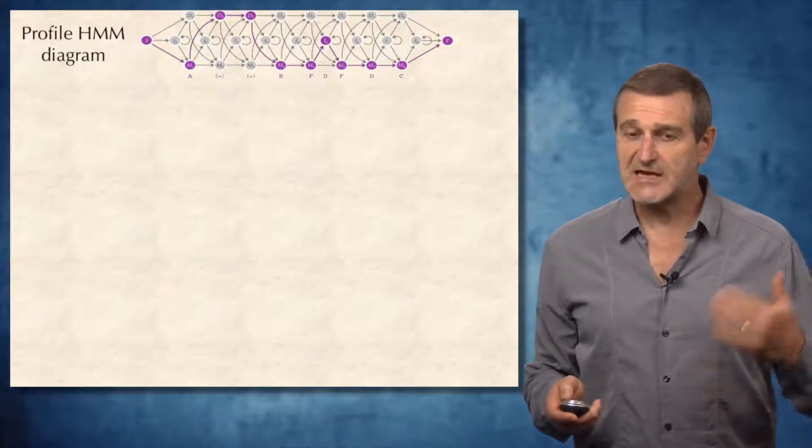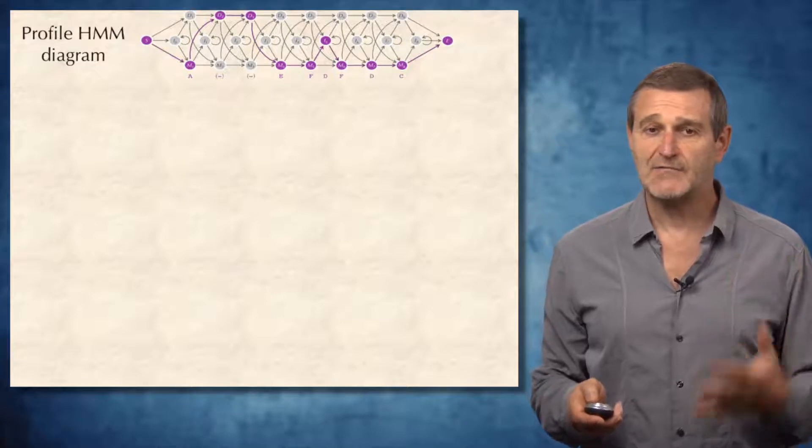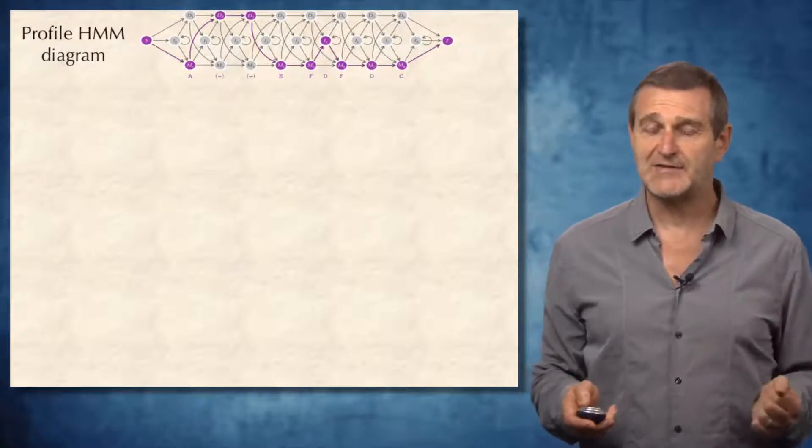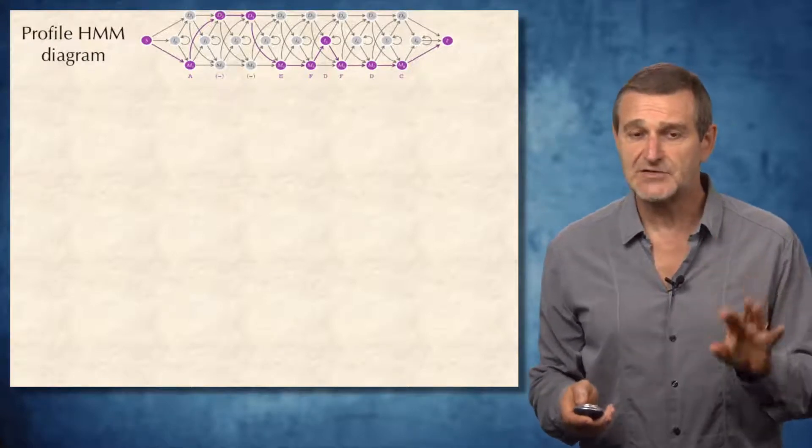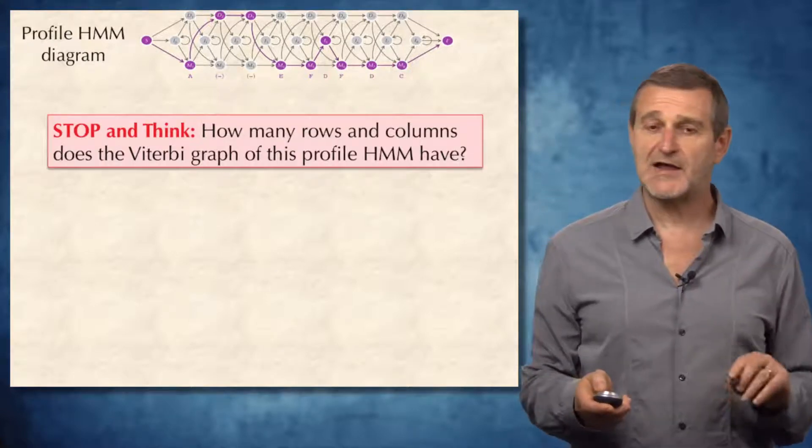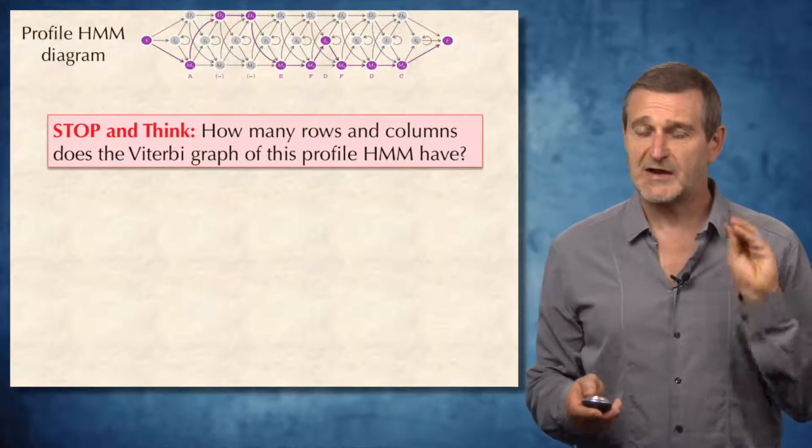So to do this classification, we need to construct a Viterbi graph for the given HMM diagram. Please note that we have not discussed yet how to construct the Viterbi graph for an HMM diagram. For example, how many rows will this Viterbi graph have?